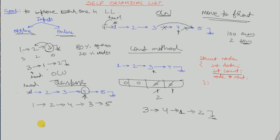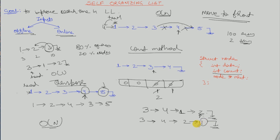The time complexity of the self-organizing list is still O(N) in the worst case. After each reordering, the next access could always be the last element. For example, after rearranging by frequency, if the next access is always the last element, it remains O(N). Even after rearrangement, one can keep querying the last element every time, so worst-case time complexity remains order of N.